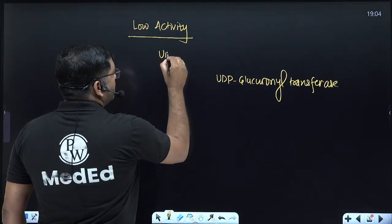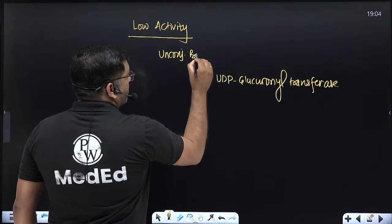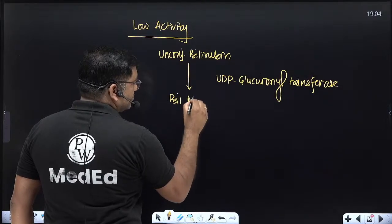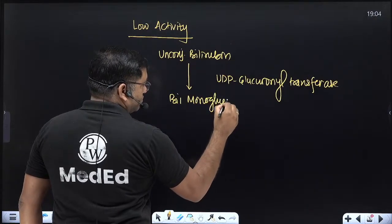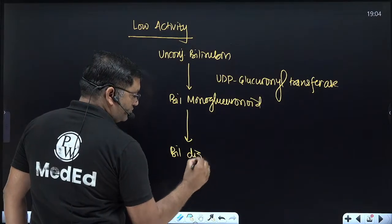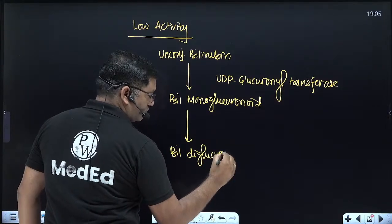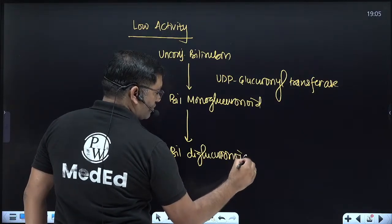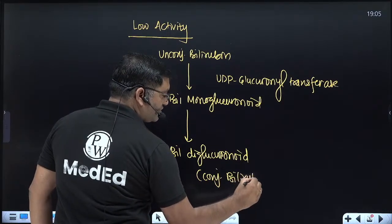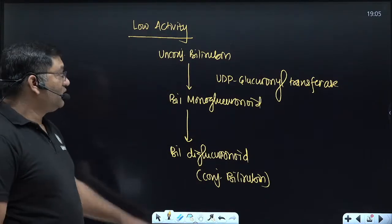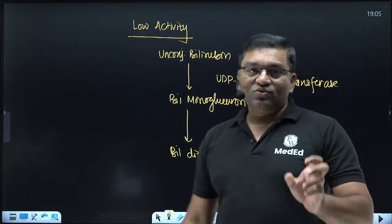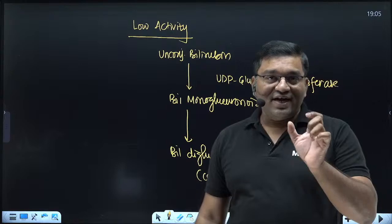UDP-glucuronyltransferase causes conjugation of bilirubin. Unconjugated bilirubin is first converted into bilirubin monoglucuronide, then into bilirubin diglucuronide. This is known as conjugated bilirubin — a water-soluble, less toxic form. In the laboratory, unconjugated bilirubin is known as indirect bilirubin, and conjugated bilirubin is known as direct bilirubin, as it is estimated by the Vandenberg reaction.